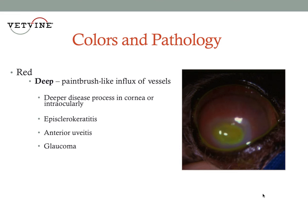In the case of deep vascularization, we see a slightly different picture. In this example, we see a severe case of corneal vascularization. It is deep. It's paintbrush-like, and it's circumferential in this case, as it generally is, although it can be focal or segmental in distribution. But this is typically an indication of a deeper disease process within the cornea or intraocular disease.